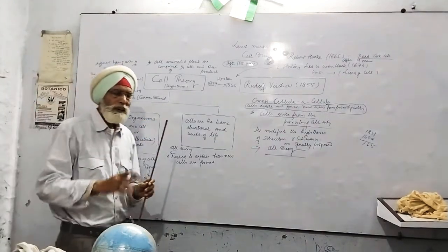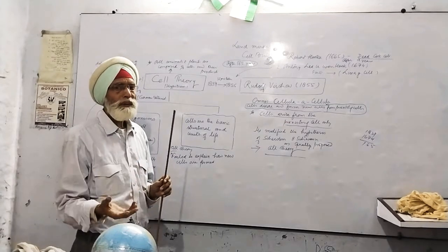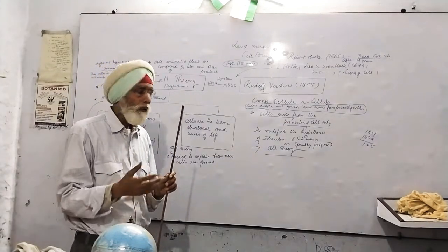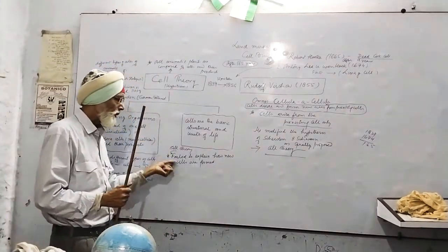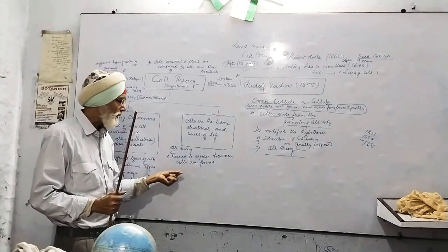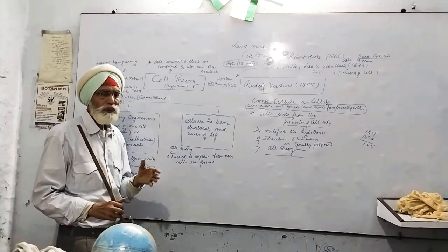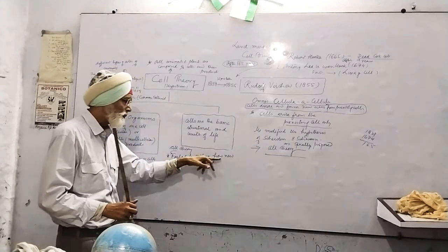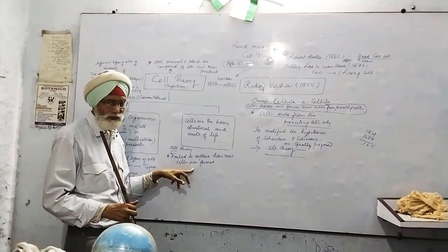But the next question, this theory, this hypothesis was not in position to explain what is the process of formation of new cells, or you can say how the new cells are formed. So this theory was failed to explain how new cells are formed.